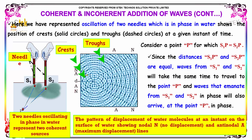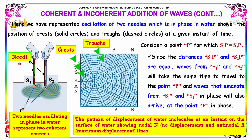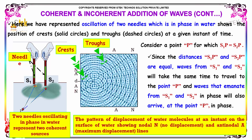Consider a point P for which S1P is equal to S2P. Since the distances S1P and S2P are equal, waves from S1 and S2 will take the same time to travel to the point P. And the waves that emanate from S1 and S2 in phase will also arrive at the point P in phase.